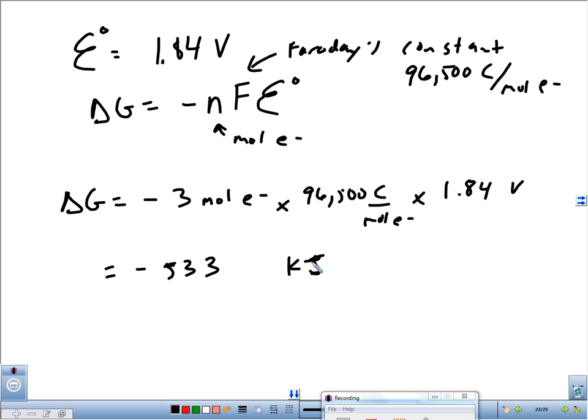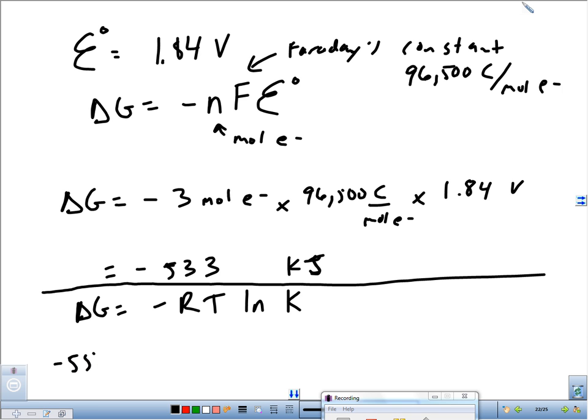So we've solved for delta G. How in the world can we get the next question, which is K? Remember this from the past. Delta G equals negative RT ln K. That's from back in the day, last week. Delta G is negative 533. That's a big number in kilojoules. So we should end up with a really large K because K is if it's moving towards the product side, it should be moving very far to the product side.